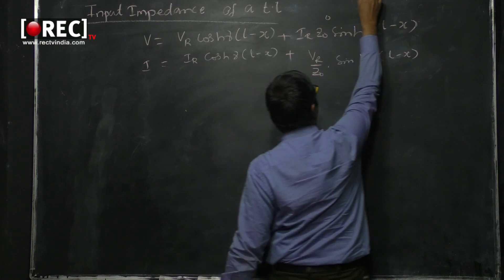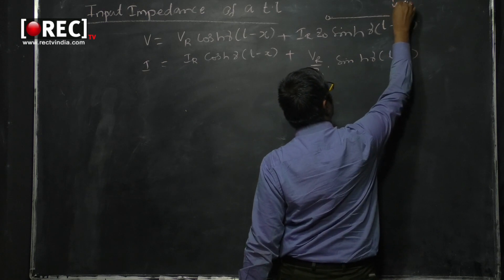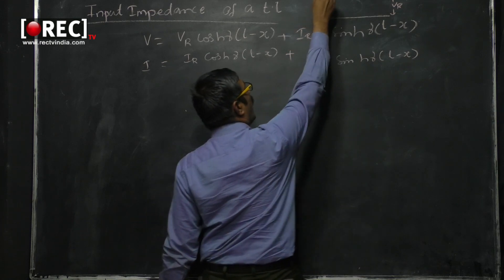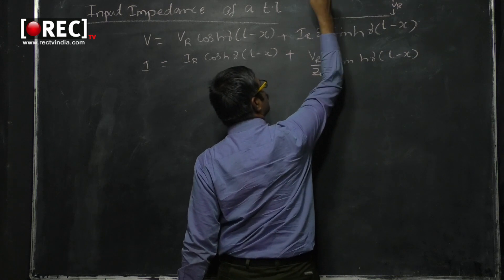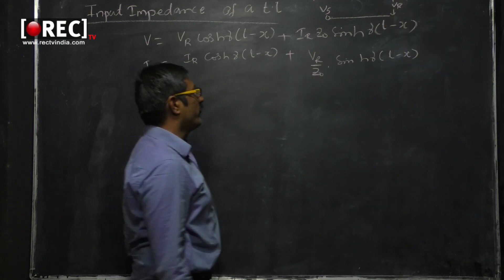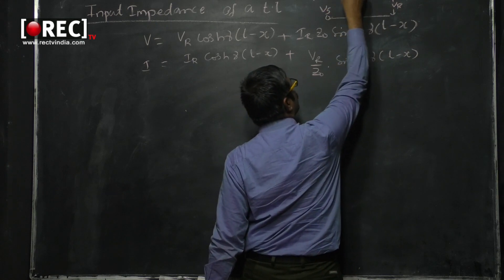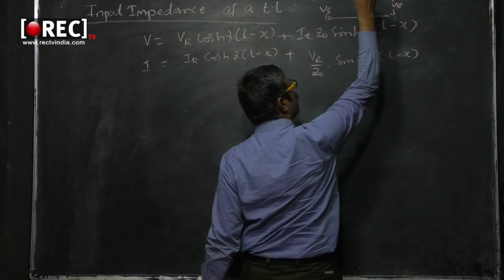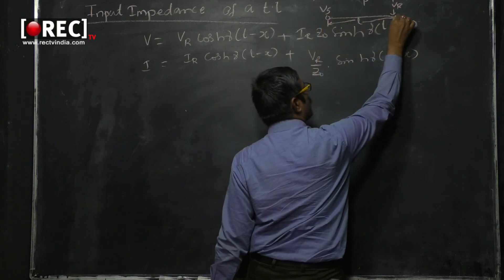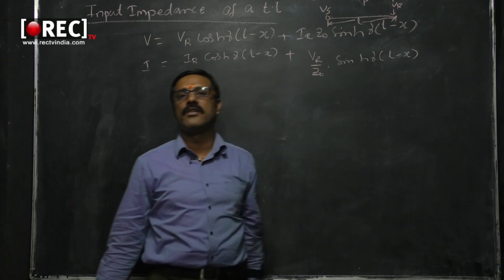Looking at the schematic of a transmission line, VR is the receiver voltage, VS is the source voltage, IS is the source current, and IR is the receiver current. Here x is the distance between any arbitrary point P on the transmission line, and l is the length of the transmission line — the distance between the source terminals and the receiver terminals.